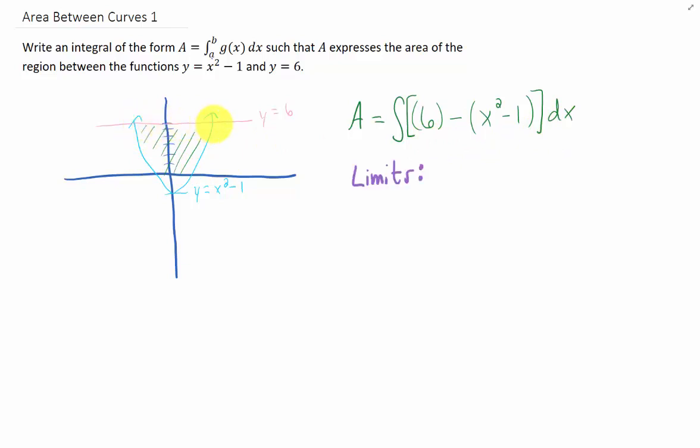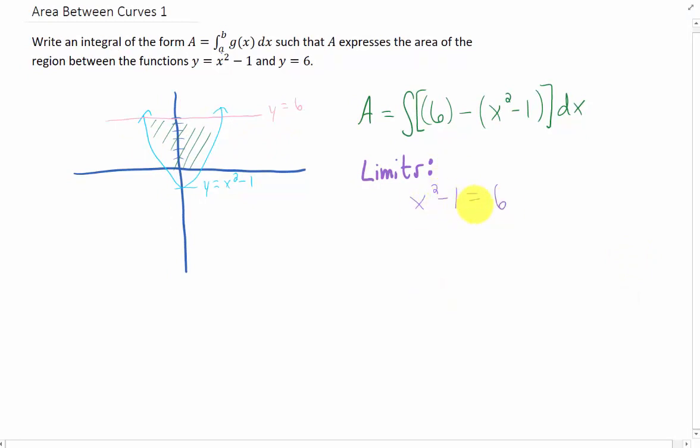How do we find the smallest and largest values of x in this region? It occurs where these two functions intersect. We set the functions equal: x² - 1 = 6, and solve for x. We get x = ±√7, which become our upper and lower limits of integration.